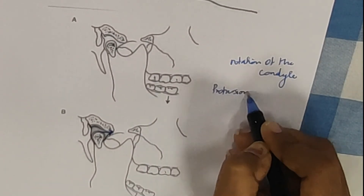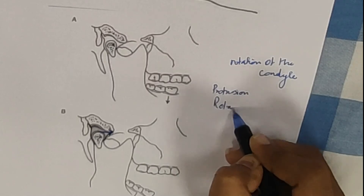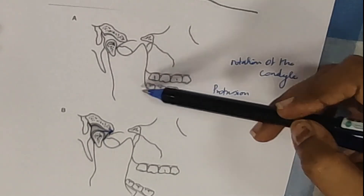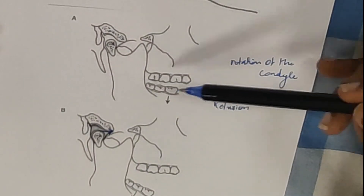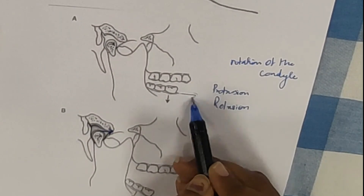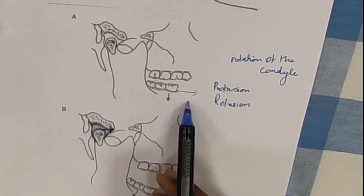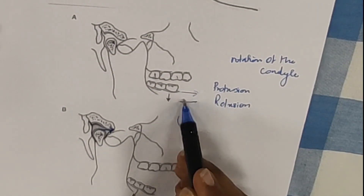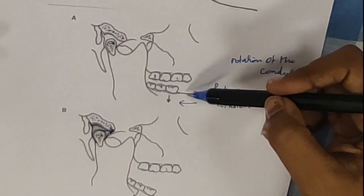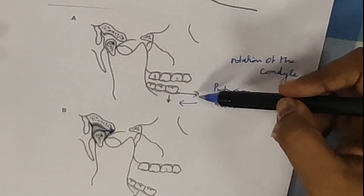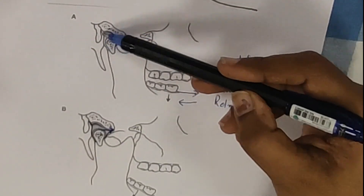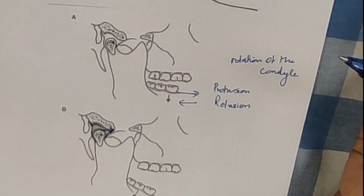The second movement is protrusion and retrusion. In protrusion, the jaw comes forwards — there is a forward movement of the lower jaw. In retrusion, the jaw moves backwards. These are essentially translatory movements and they are minimal; the majority of this movement happens in the upper joint.